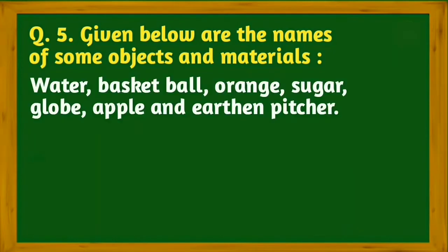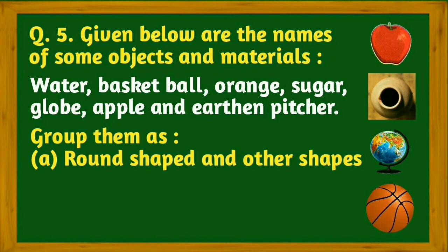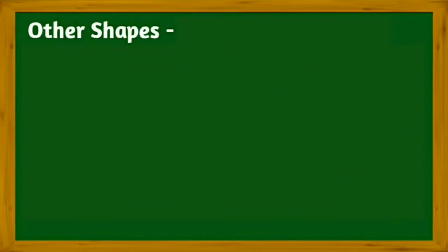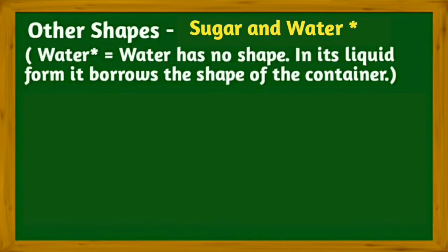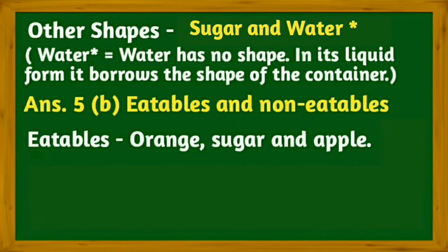Question five: Given below are the names of some objects and materials: water, basketball, orange, sugar, globe, apple, and earthen pitcher. Group them as round shaped and other shapes. Round shaped: basketball, globe, orange, apple, and earthen pitcher. Other shapes: sugar and water. Please note that water has no shape in its liquid form; it borrows the shape of the container.